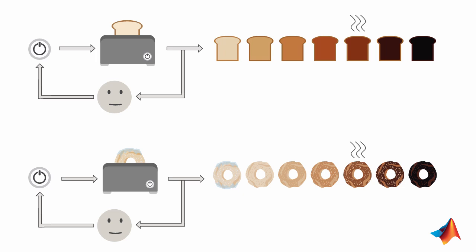Let's try this on a slice of bread and a frozen bagel. You turn on the toaster and start monitoring your bread. When the toast reaches the color you want, you turn off the toaster.